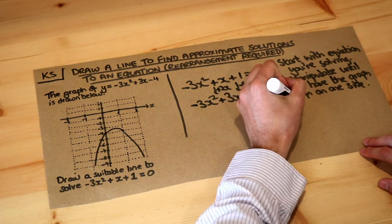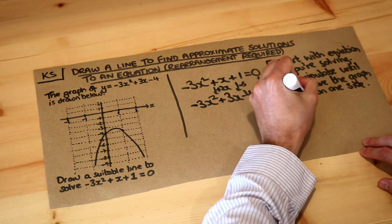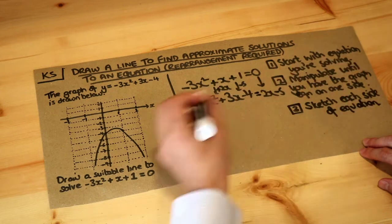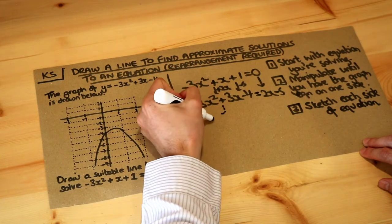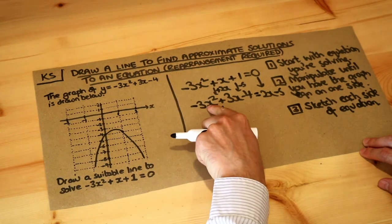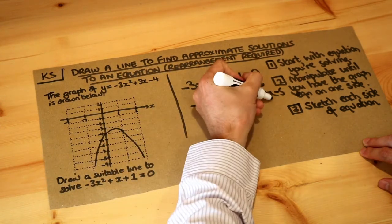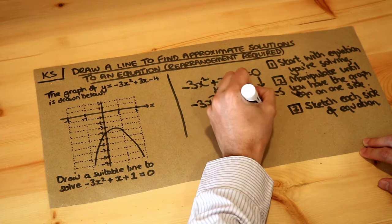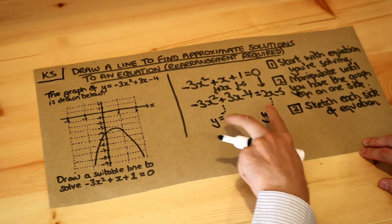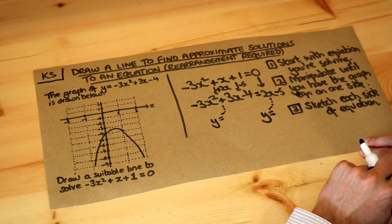Now at this stage, you sketch each side of the equation. You imagine there's a y equals, so we've got y equals minus 3x squared plus 3x minus 4, which we've got a sketch of here, and we also sketch y equals the right-hand side, so we sketch y equals each side of the equation.